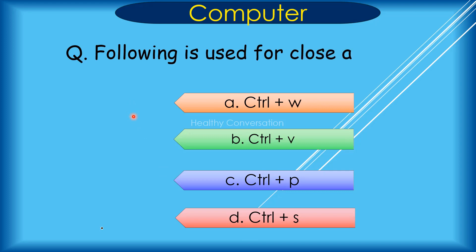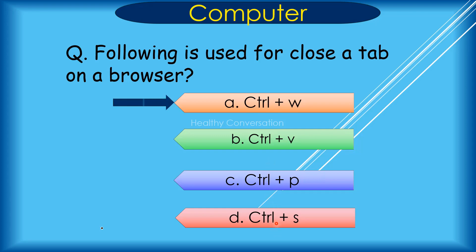Question: Which shortcut is used to close a tab on a browser? A. Control + W, B. Control + V, C. Control + P, D. Control + S. Correct answer is A. Control + W.